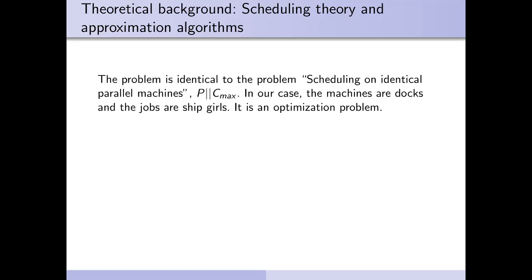I will now give a bit of background on scheduling theory and approximation algorithms that will help us put our problem on a proper theoretical foundation. Our problem is functionally identical to the problem scheduling on identical parallel machines P||Cmax. This is standardized notation. The P means we are working with parallel identical machines, and Cmax is what we are trying to minimize. In our case, the machines are docks and the jobs are shipgirls. It is an optimization problem as opposed to a decision problem. I could now go on to give a normal lecture about scheduling theory here, but I keep everything in Kantai Collection terms. I mean, it's just more fun and when do you get to do that?